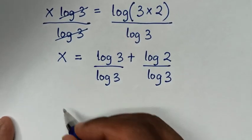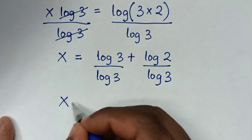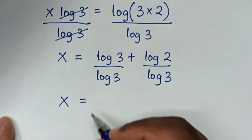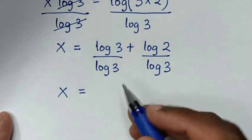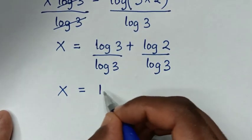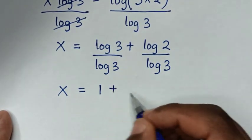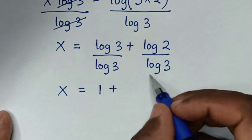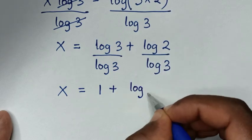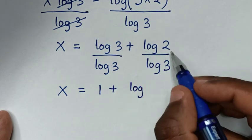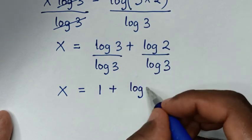Because we have log of 3 in the denominator, we'll divide both parts by log of 3. Then it will be x is equal to log of 3 divided by log of 3, which is 1, plus log of 2 over log of 3.